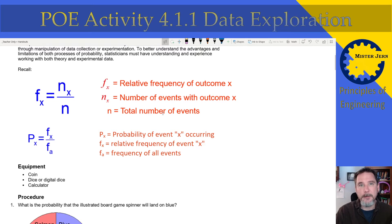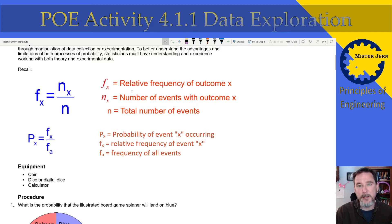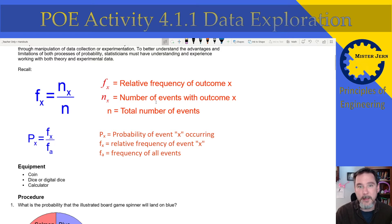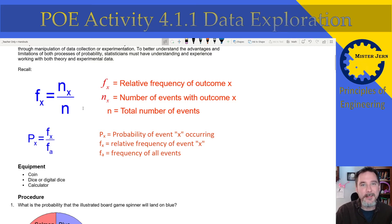I pasted some of the equations from the notes in here — the ones you're going to be using for this activity. Such as this first one: f of x is equal to n sub x divided by n, where f sub x is the relative frequency of outcome x. Let me just give you an example. Instead of x, let's say heads.